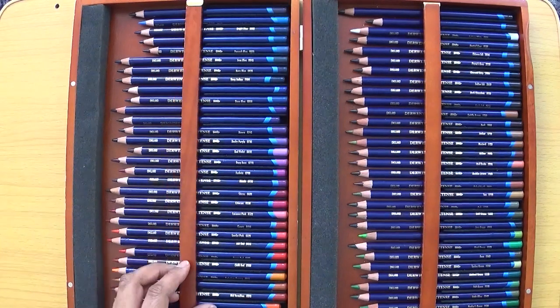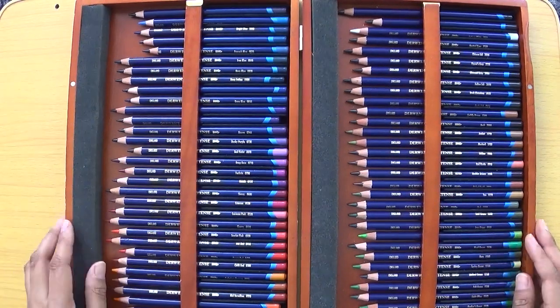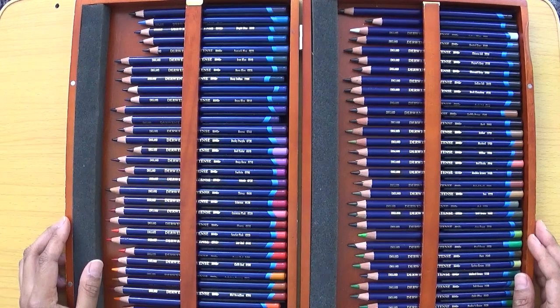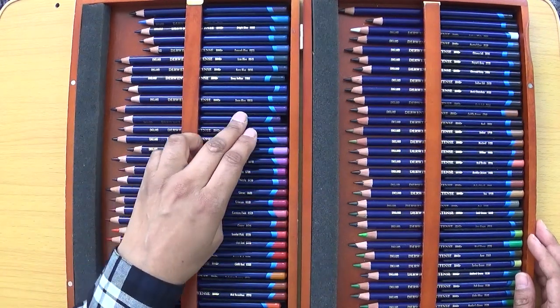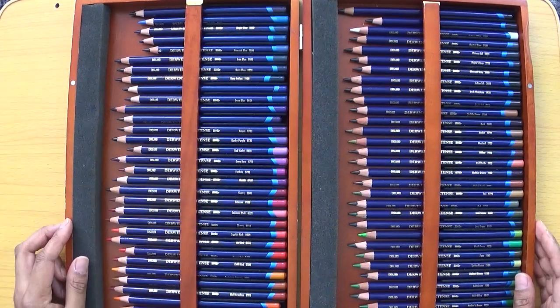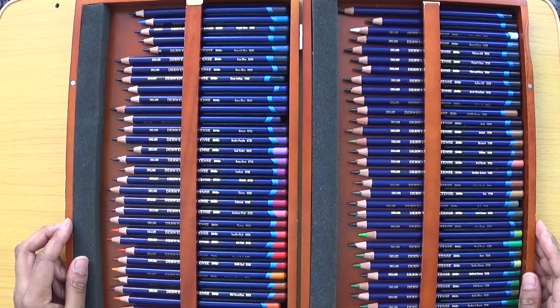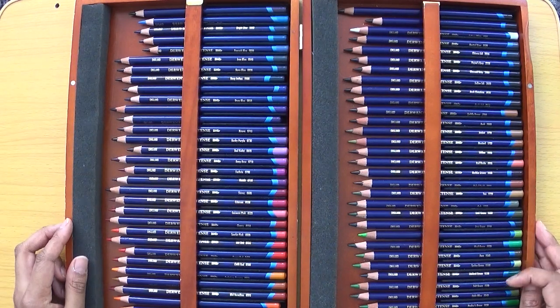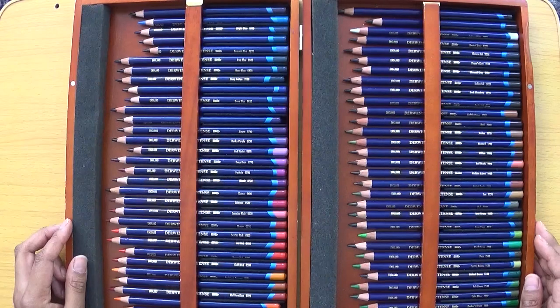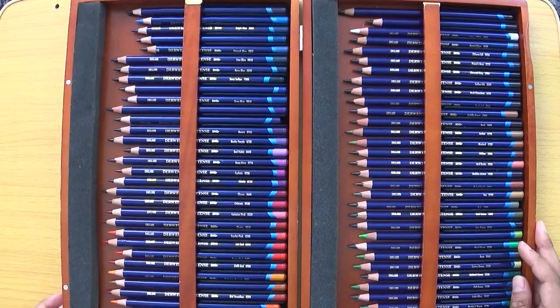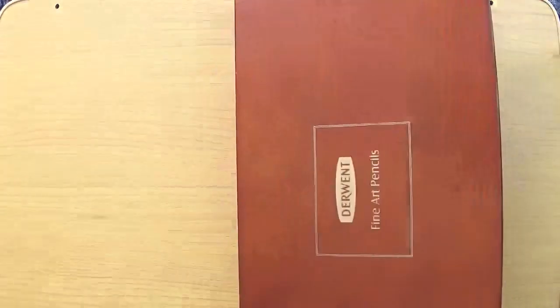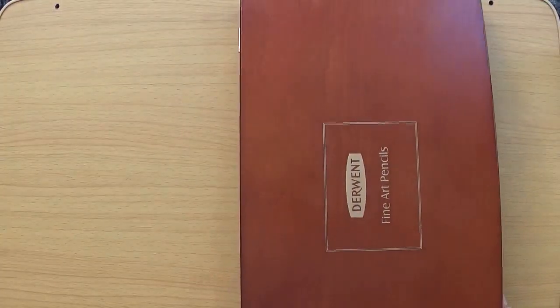So Inktense, why do I really like them? Because the colours are so vibrant and they just work a dream. I really really like the intense colours. That's the main reason I like the colours that you get in the set as well, and I just enjoy using them. So that would be my second choice, the Derwent Inktense pencils.